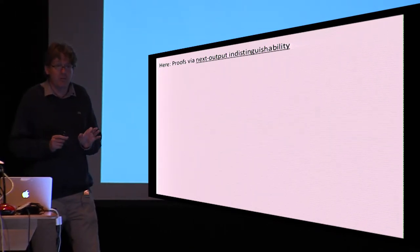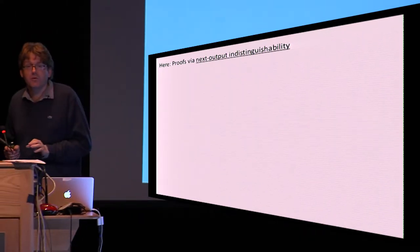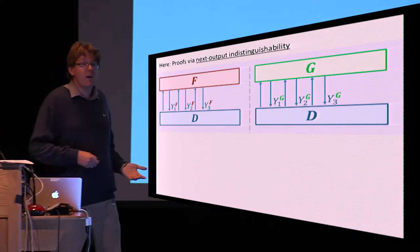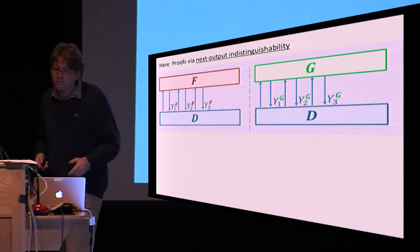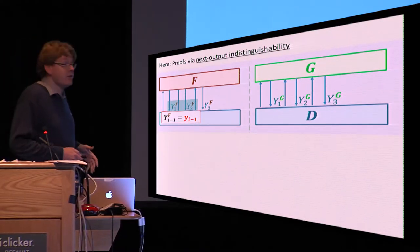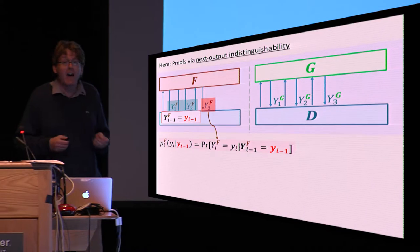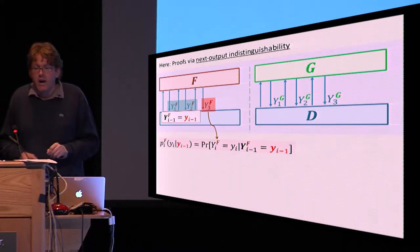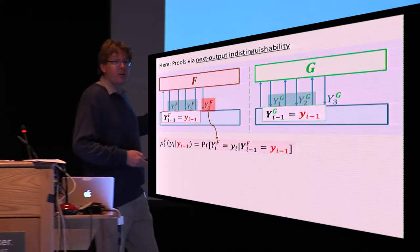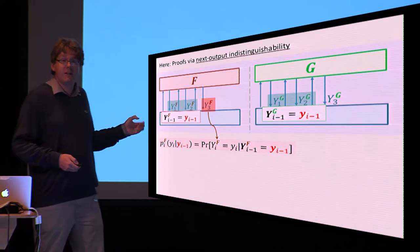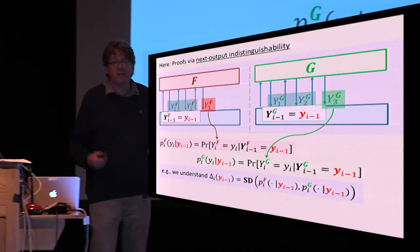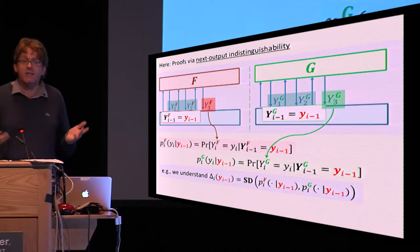However, we focus on a specific class of proofs, which I call next output indistinguishability proofs. What that means is that we consider settings where the distinguisher has performed a partial interaction, say with the system f, has observed i-1 outputs, and now, given this observation, there is a well-defined probability distribution for the i-th output, the output to the i-th query. We want to compare this next output probability distribution with the one we will get if you were actually interacting with the system g and we had seen the same partial set of outputs so far.